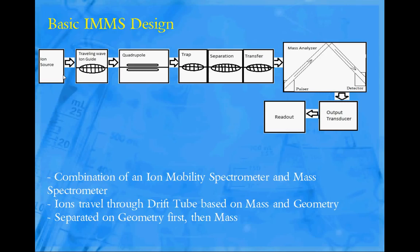The output transducer is going to take the signals received from the detector through a photomultiplier tube and incorporate it into a mass spectrum and overlay it with the ion mobility part. And I will show you an example of that in a little bit.